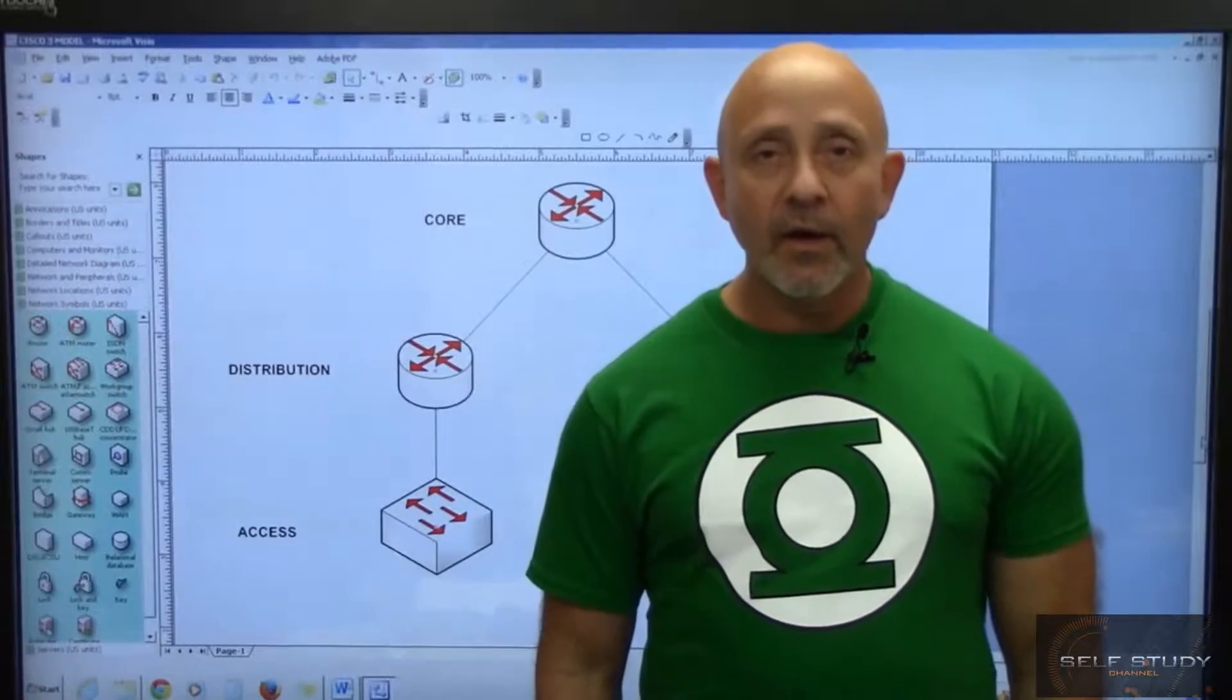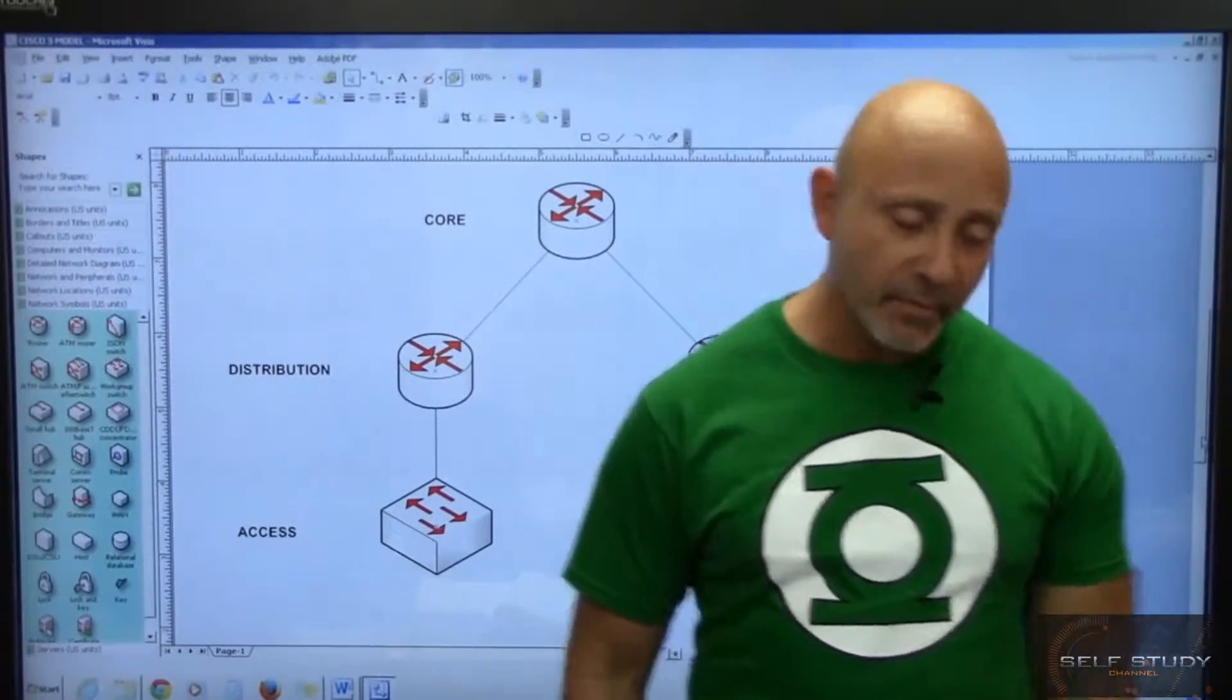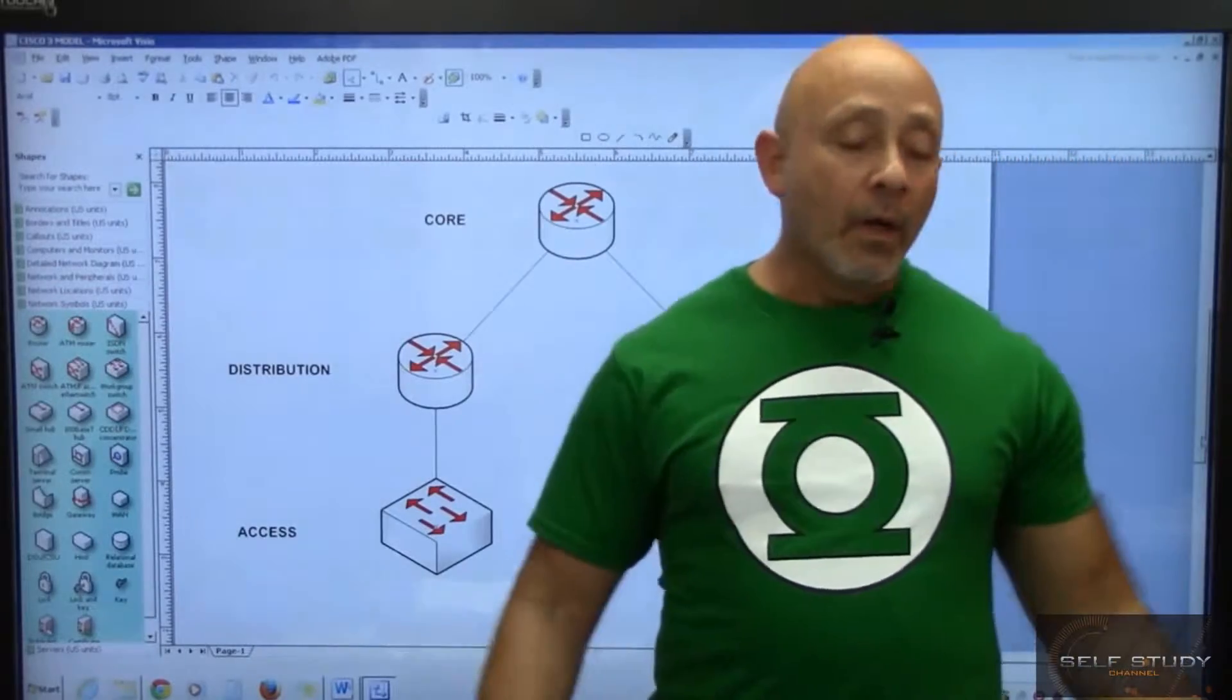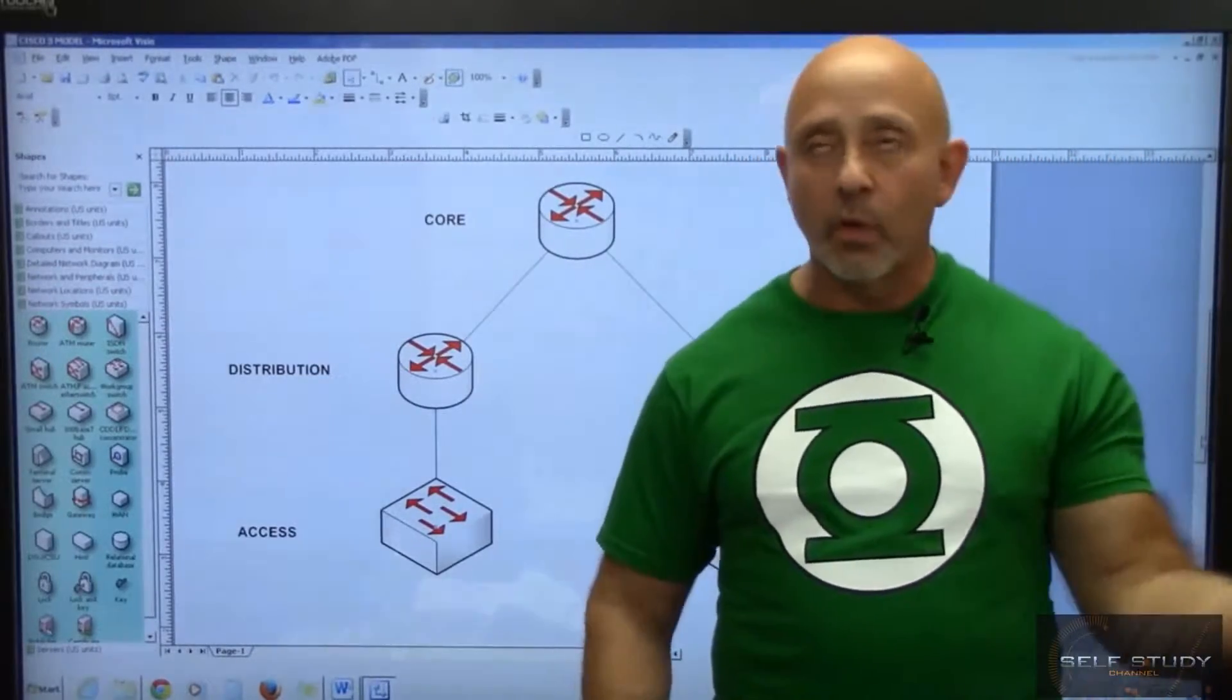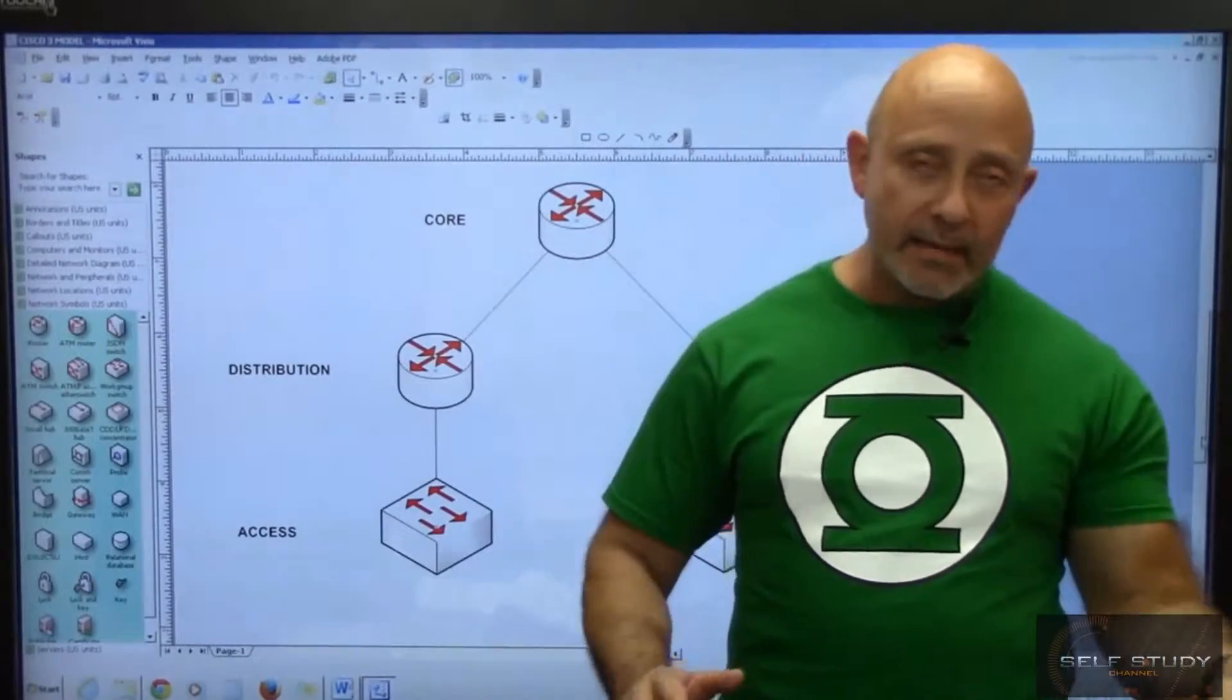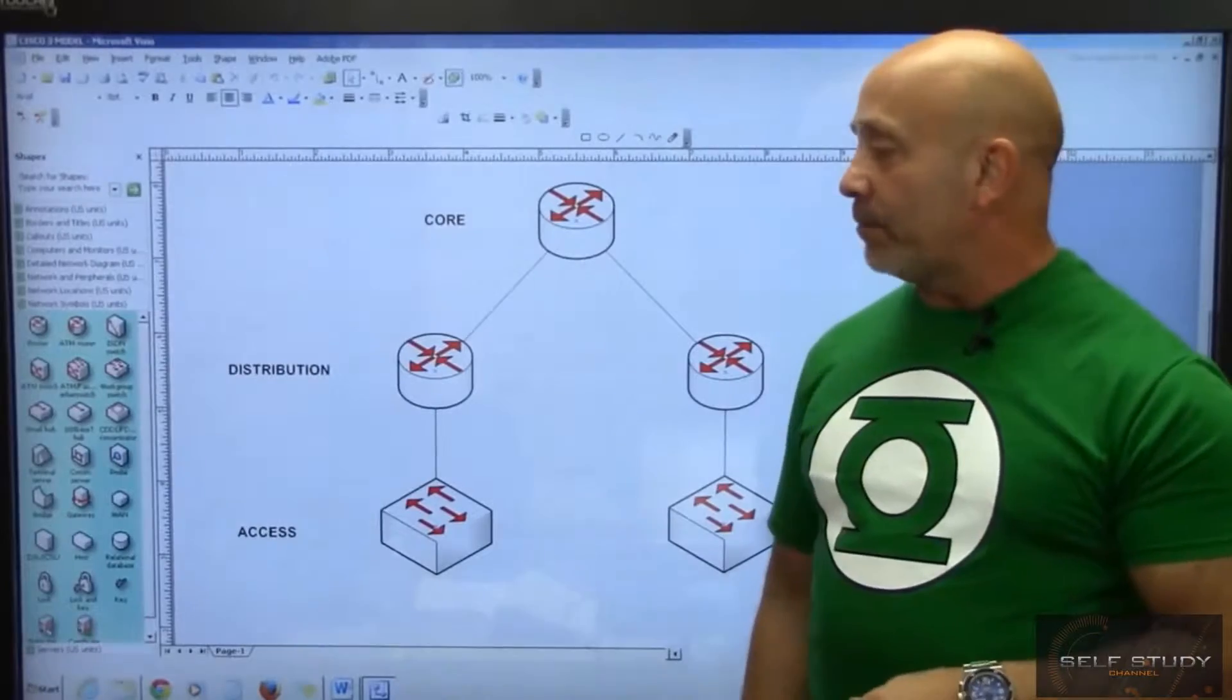Alright, another model: Cisco's three-tier model. We've got to learn it. They'll ask you about the core, the distribution, and the access layers. I have them back here, and I'll explain a little bit about everything briefly.